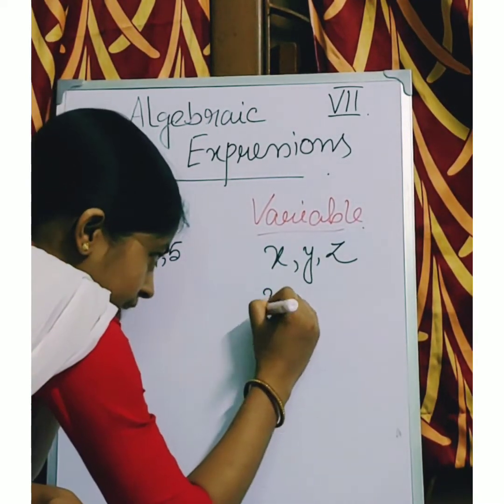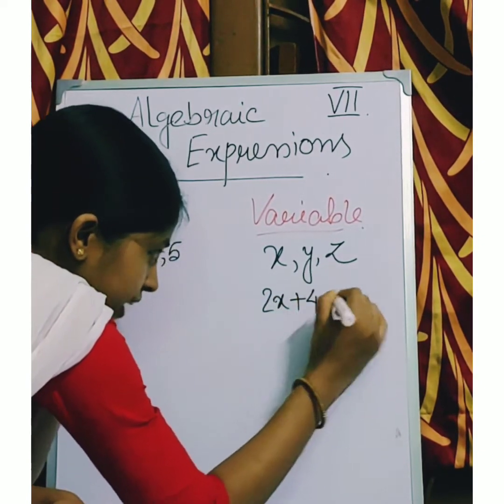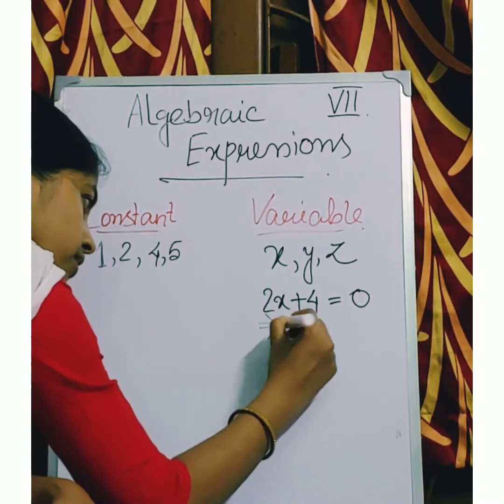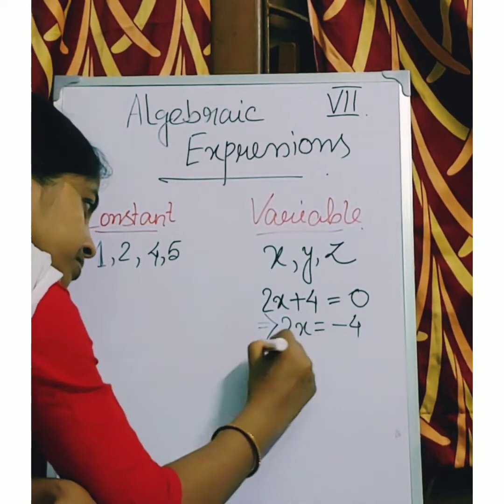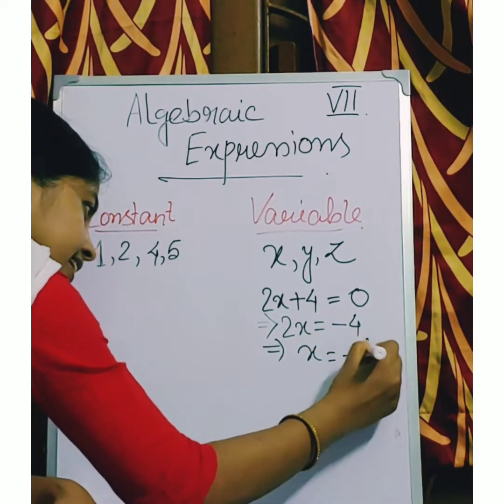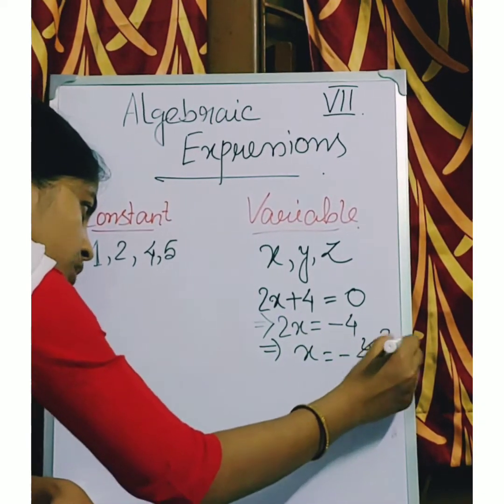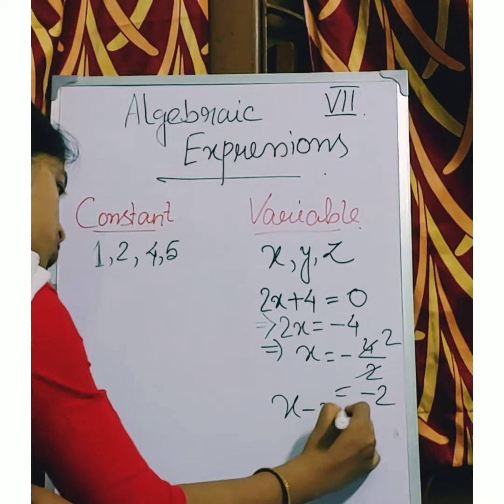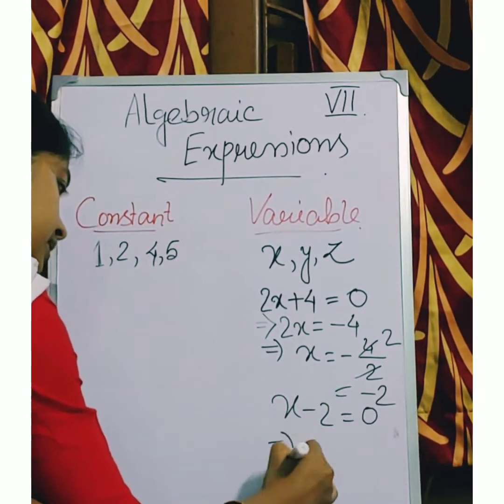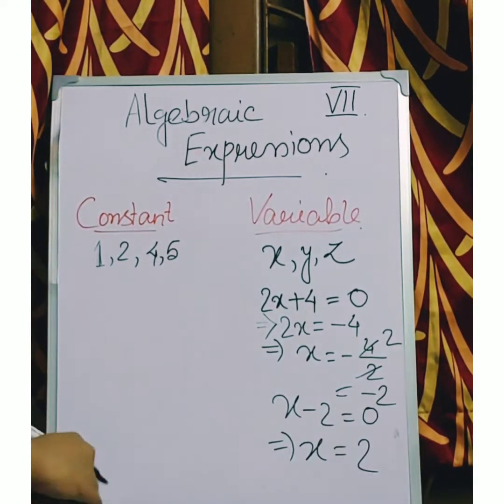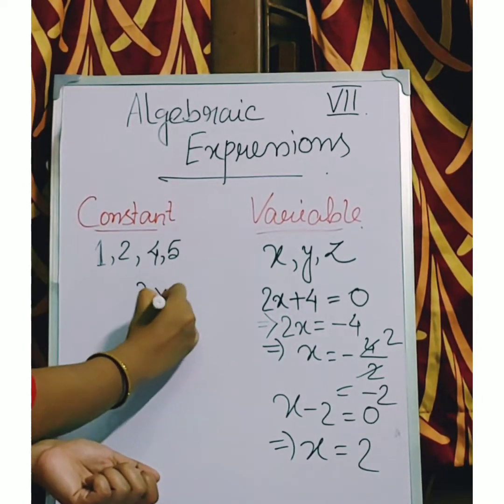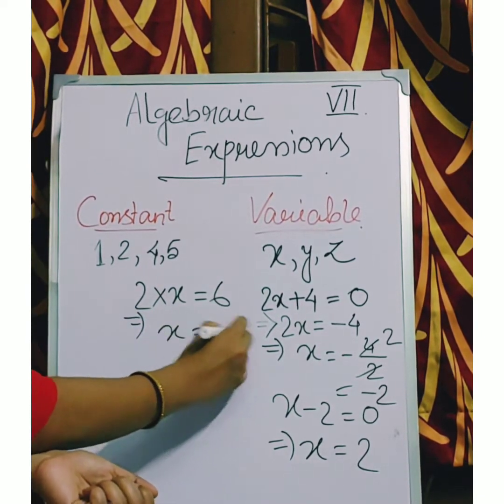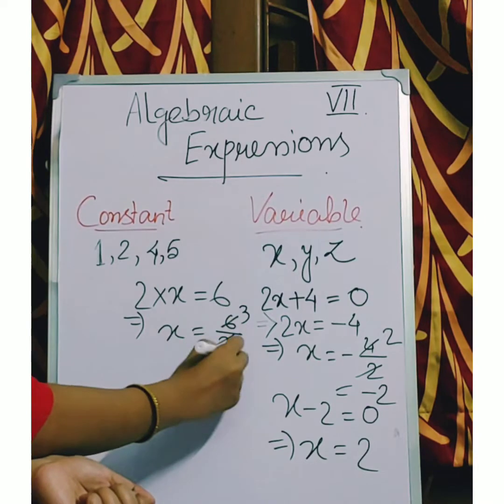Suppose I am writing 2x plus 4 equals to 0. So if I solve this equation, I get the value of x is minus 2. Now x minus 2 equals to 0, value of x is 2. Now 2 into x equals to 6, so the value of x is 3.